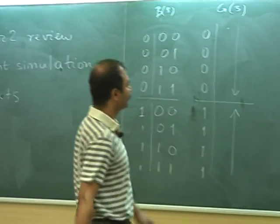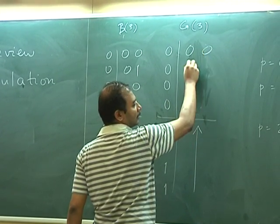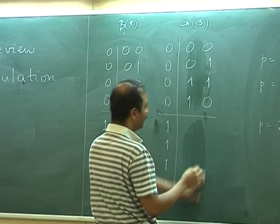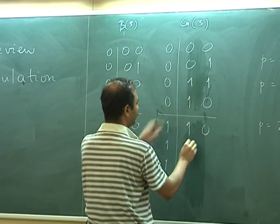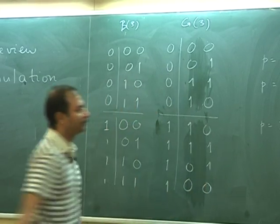So similarly, if I take those code words, I'm going to write out 0, 0, 0, 1, 1, 1, 1, 0, I have to reflect it. So I say 1, 0, 1, 1, 0, 1, 0, 0.